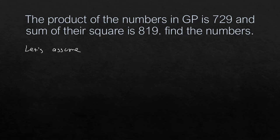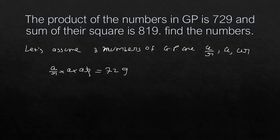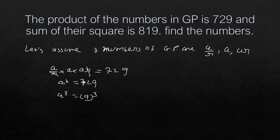Let us assume three numbers in GP are a/r, a, and a·r. In GP, numbers are in ratio/multiplication. So their product is (a/r) × a × (a·r) = a³ = 729, which gives a³ = 729, so a = 9.